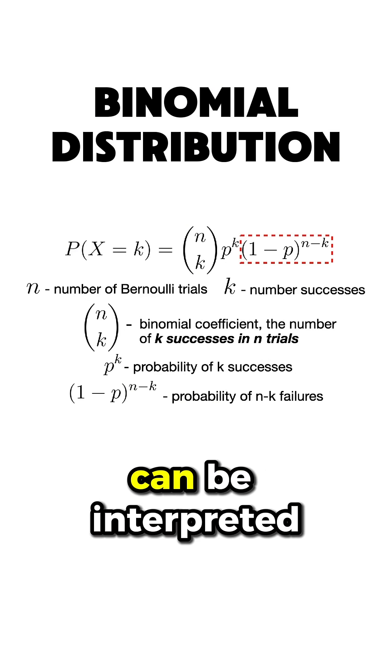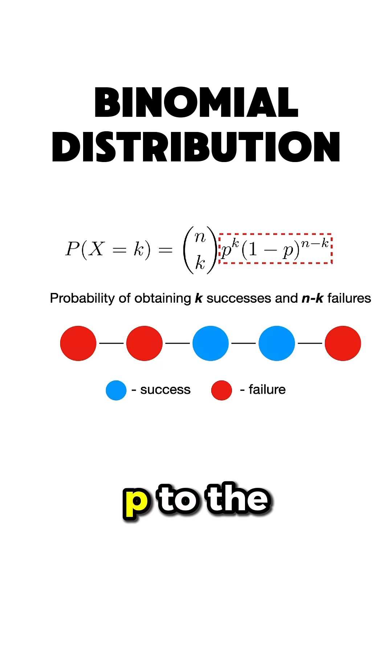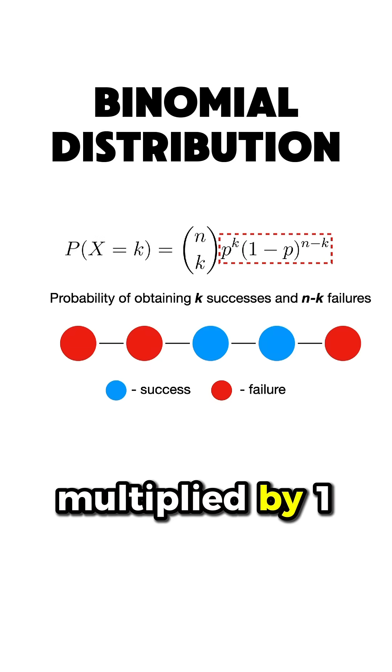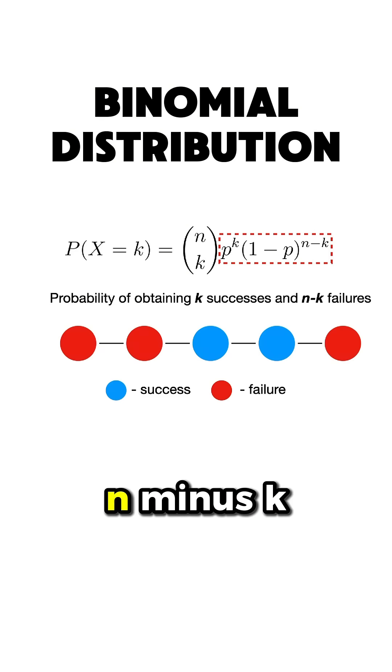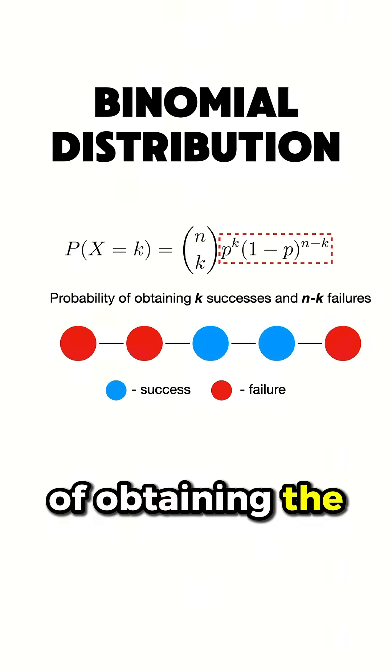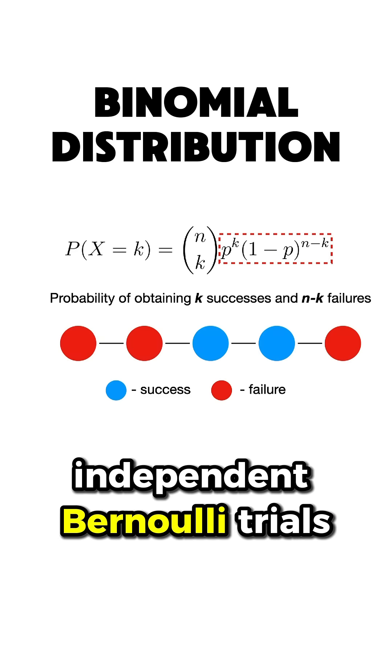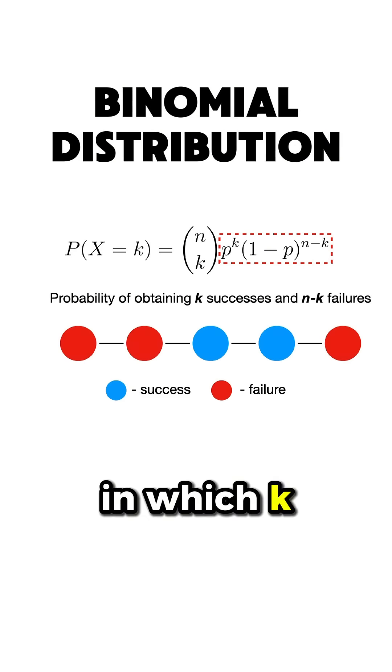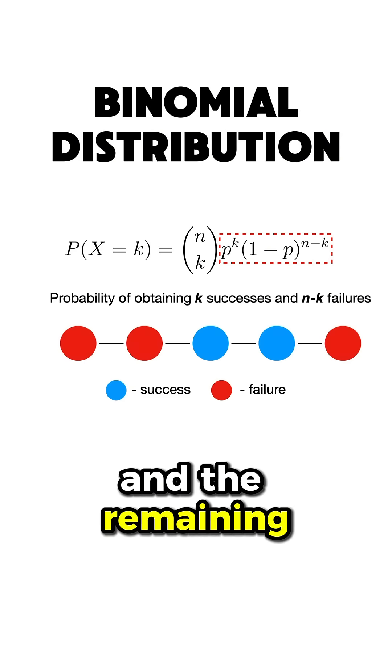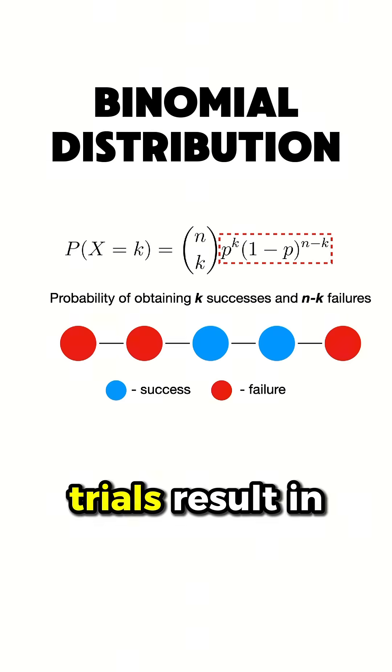Overall, the formula can be interpreted as follows. p to the power of k multiplied by (1 minus p) to the power of (n minus k) is the probability of obtaining the sequence of n independent Bernoulli trials, in which k trials are successful, and the remaining n minus k trials result in failure.